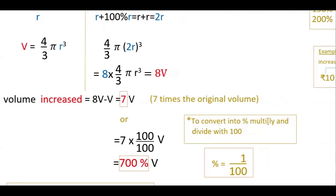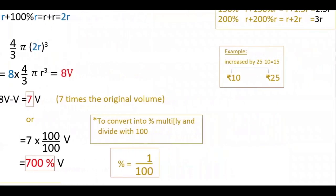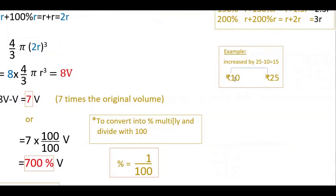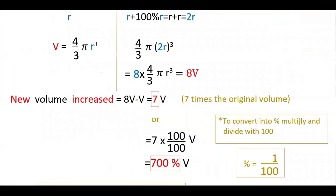For example, if you have 10 rupees and it is increased to 25 rupees, you now have 25 rupees, but how much it increased is 25 minus 10, that is 15 rupees — it is increased by 15 rupees. Similar to this, in our question 8v minus v is 7v, so it is increased by 7 times the original volume.